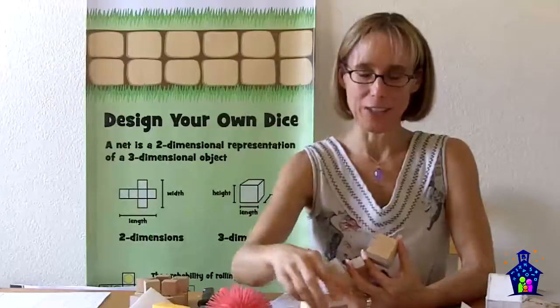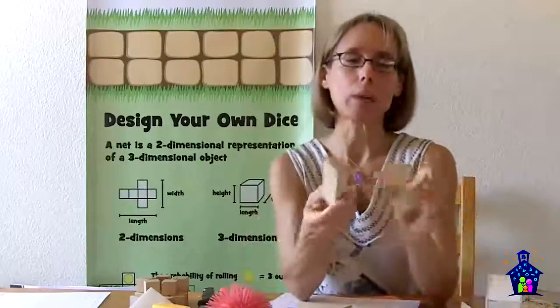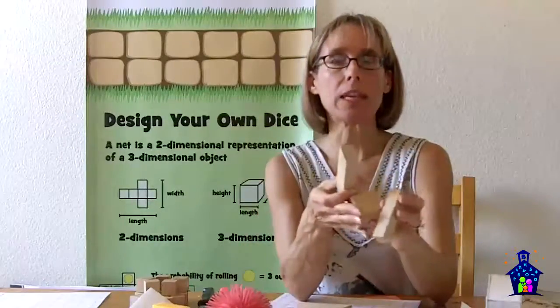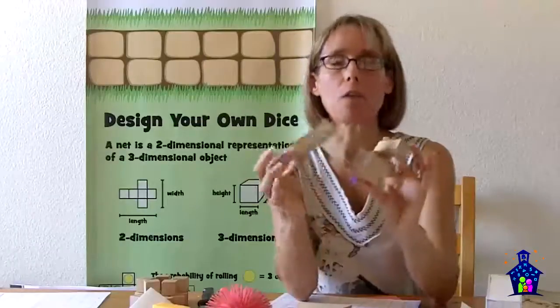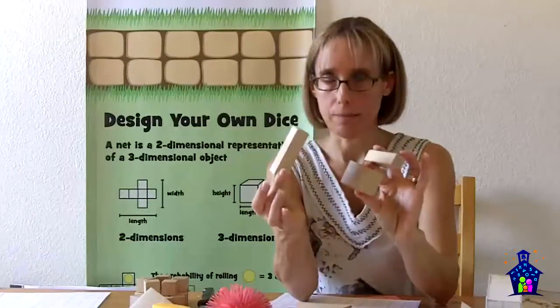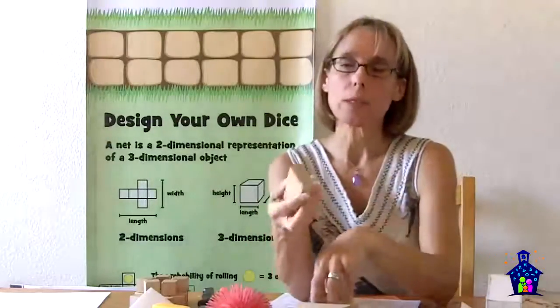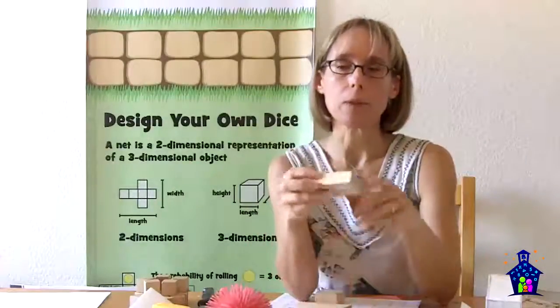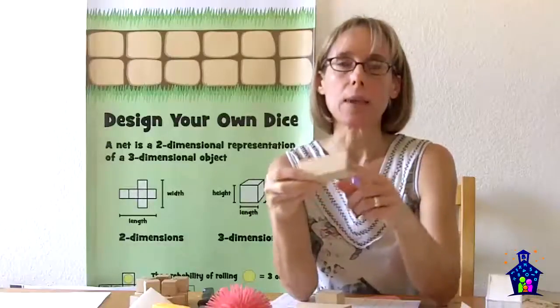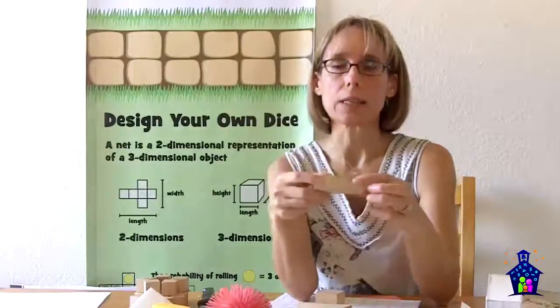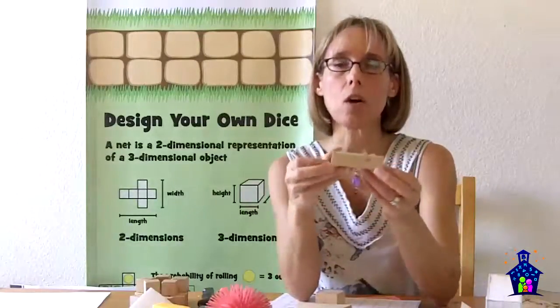And you can show them as many objects as you like. But then I have them work in pairs to come up with a definition for a rectangular prism. So when we regroup, we write that definition. They put it in their journals. So a rectangular prism is a solid, a three-dimensional object that's made up of six faces. And those faces are all rectangles.